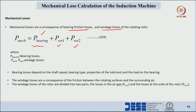The bearing loss depends upon the shaft speed, bearing type, properties of lubricants, and how much load is acting on the bearing. Windage losses are a consequence of friction between the rotating surface and the surrounding air.